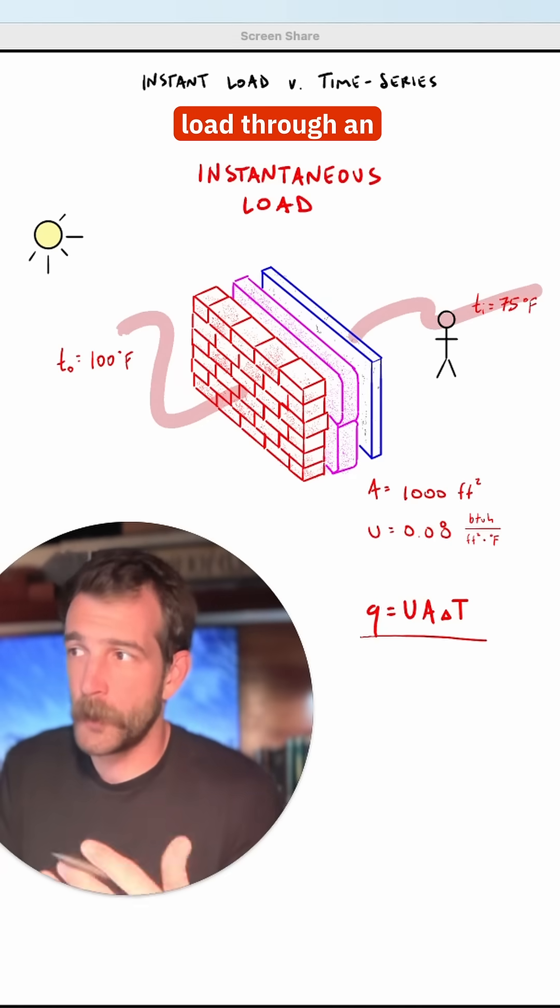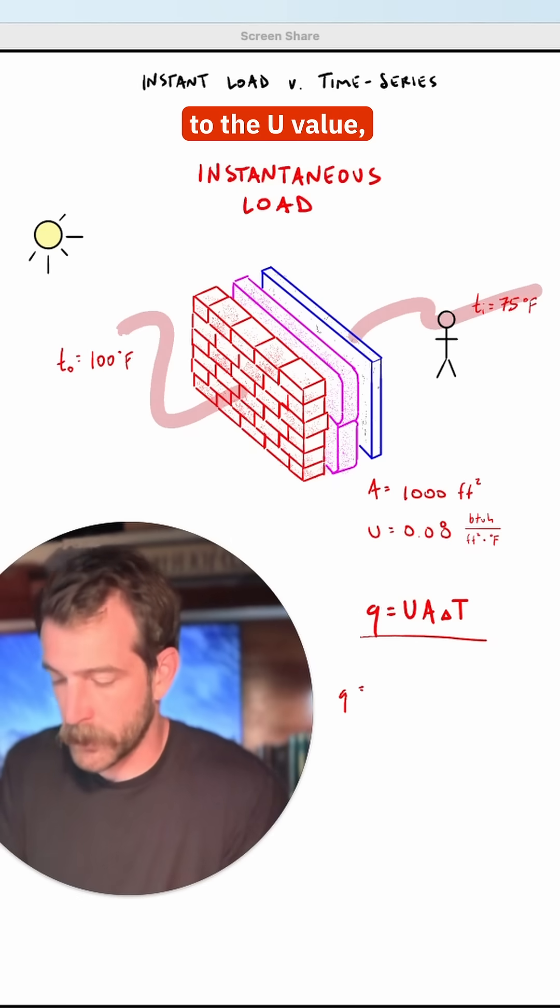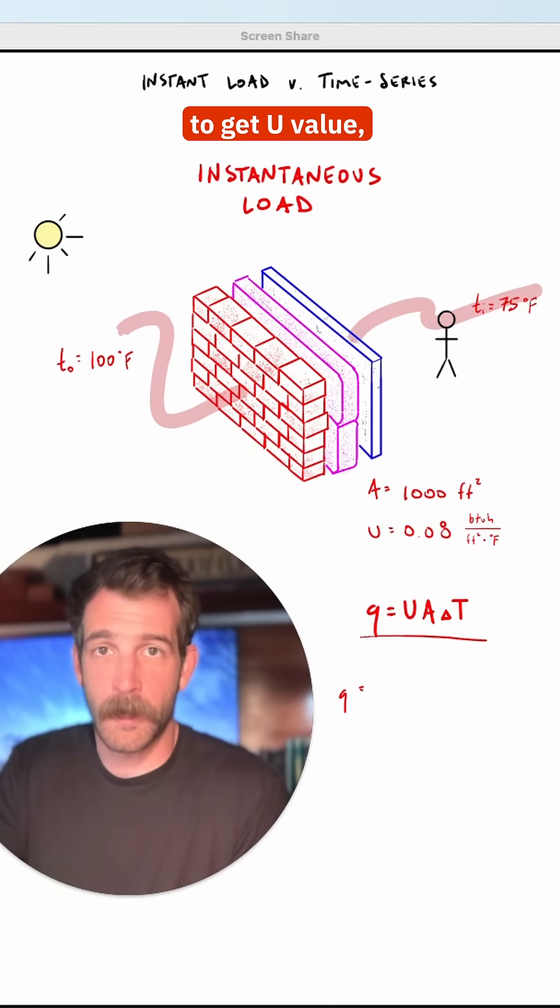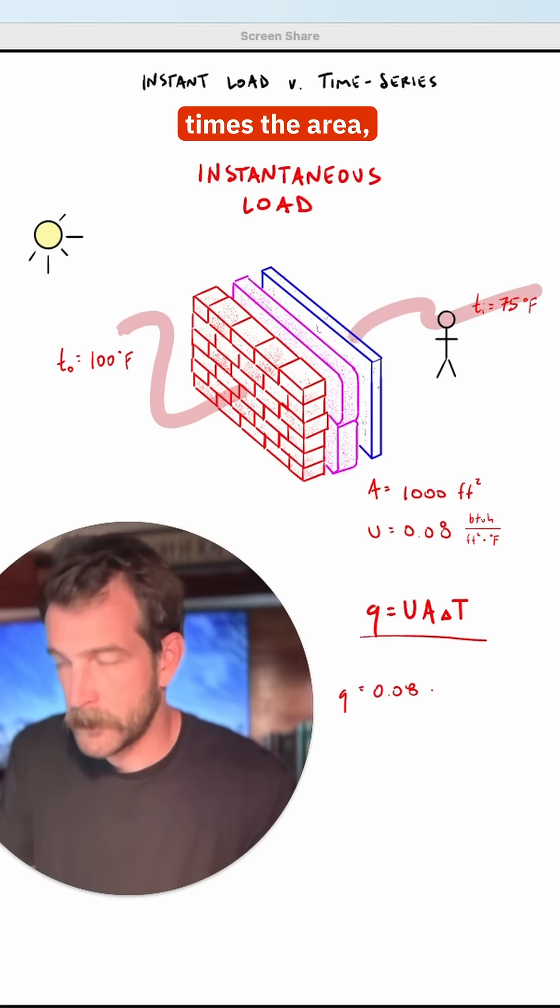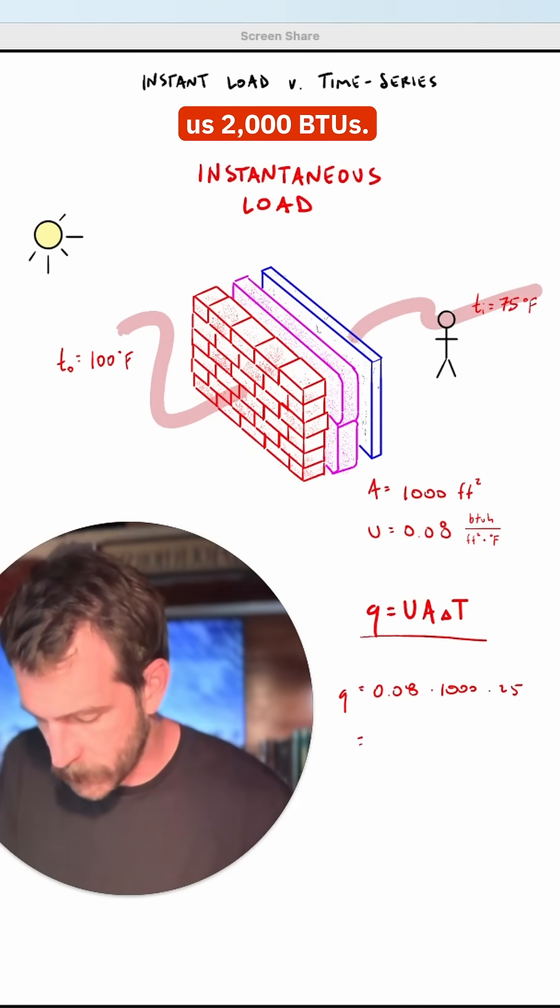This is the basic equation for load through an assembly and is how we'll calculate instantaneous load. So for this wall assembly, it's going to be Q equals the U value, which if you want to know how to get U value, check out the video from yesterday, times the area times delta T. And this will give us 2000 BTUs.